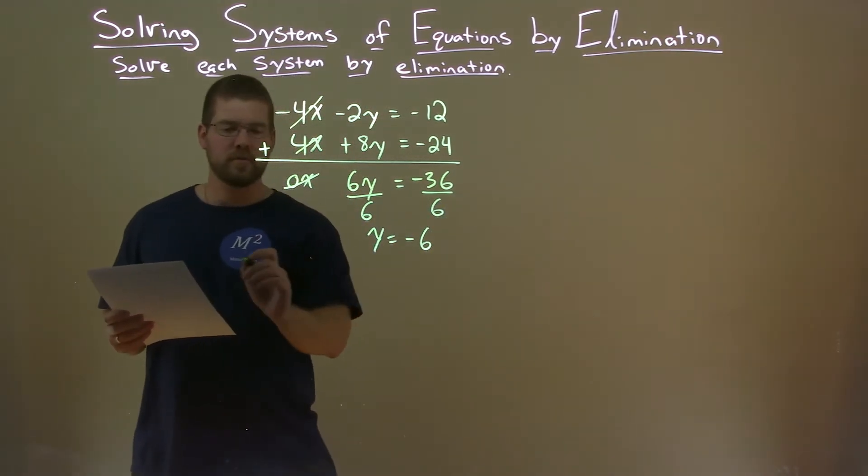What are we left with? Well, x equals negative divided by negative is a positive. 24 divided by 4 is 6. So we have x is 6, y is negative 6. Our final answer is a coordinate point 6 comma negative 6, and there we have it.